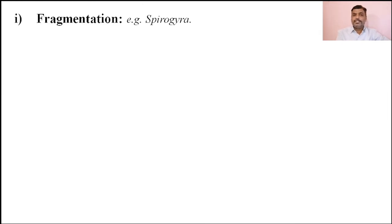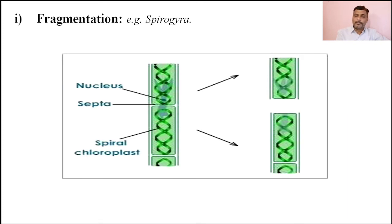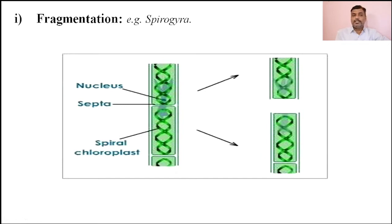The first type of asexual reproduction is fragmentation, which is generally carried out in lower organisms like Spirogyra. Fragmentation is when the individual organism is broken down into two or more pieces — that is, different types of fragments are formed. We can clearly see in this diagram that the cellular structure of the Spirogyra is broken down into two different fragments. Each fragment then grows into a new individual plant.